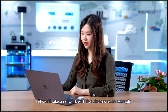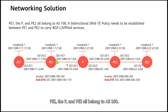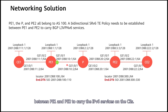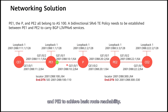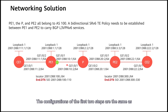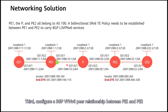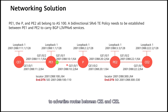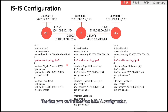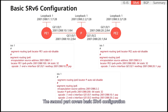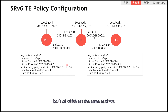Let's take a network with five devices as an example. P1, the P, and P2 all belong to AS100. A bidirectional SRv6 TE policy needs to be established between P1 and P2 to carry the IPv6 services on the CEs. The configuration roadmap is as follows. First, enable AS100 P1, the P, and P2 to achieve basic route reachability. Second, configure an SRv6 TE policy between P1 and P2. The configurations of the first two steps are the same as those in the BGP L3 VPN v4 scenario. The first part covers basic SRv6 configuration and SRv6 TE policy configuration, both of which are the same as in the BGP L3 VPN v4 scenario and therefore not described in detail.